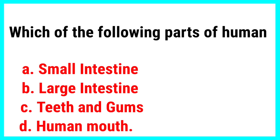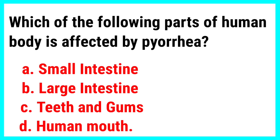Which of the following parts of human body is affected by pyorrhea? Correct answer is teeth and gums.